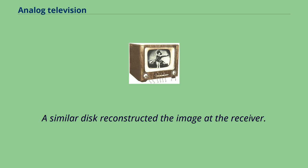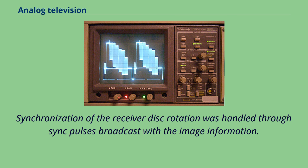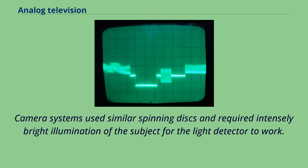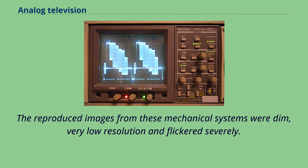Camera systems used similar spinning disks and required intensely bright illumination of the subject for the light detector to work. The reproduced images from these mechanical systems were dim, very low resolution and flickered severely.